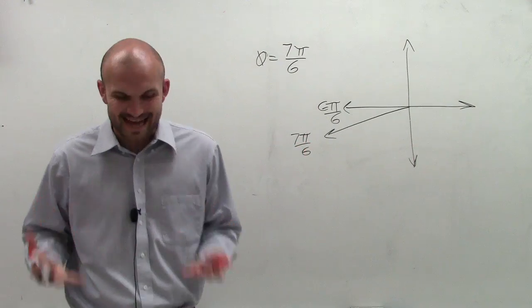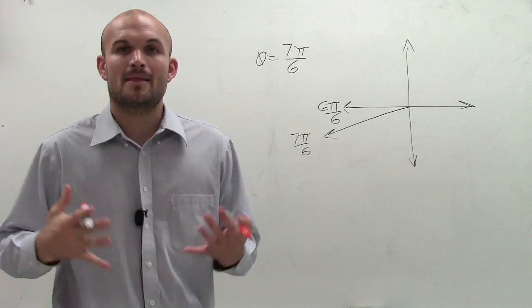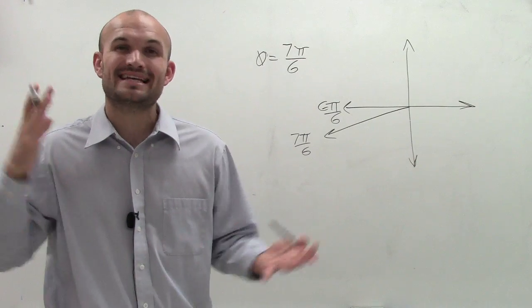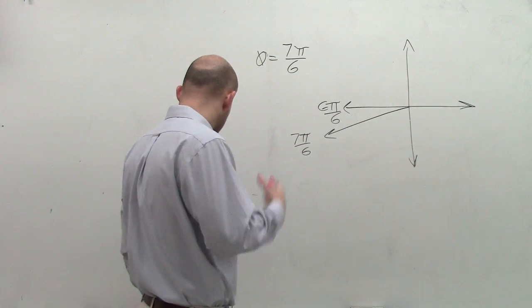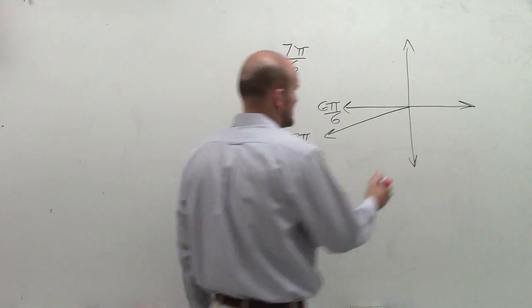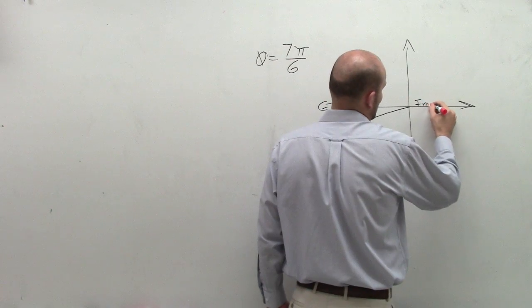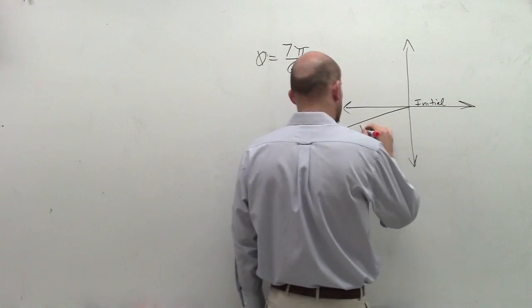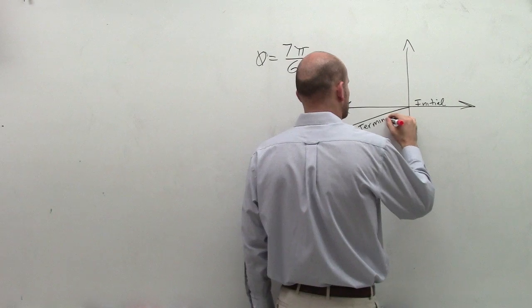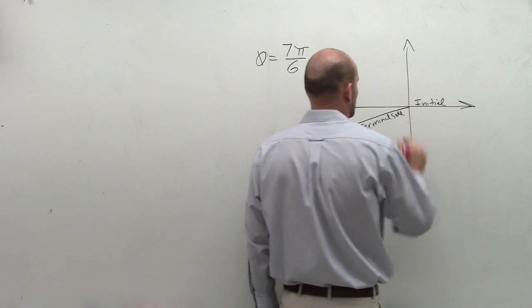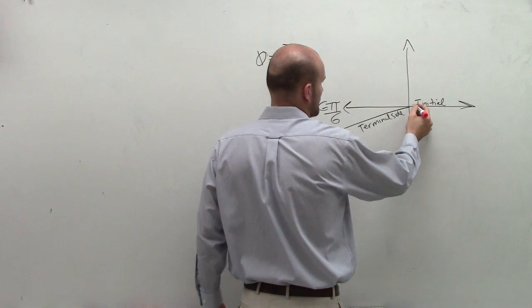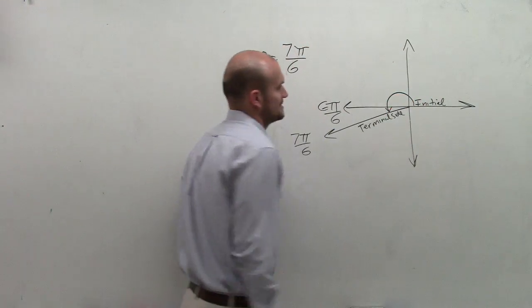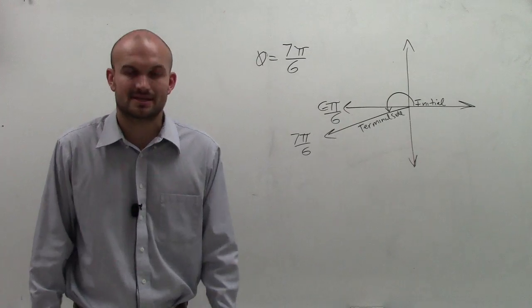So if you remember the definition of coterminal angles, that means two angles that have exactly the same initial and terminal side. So here's my initial, and here's my terminal side. So if I have my initial and terminal side, so the first angle I drew goes like this. And that was 7π over 6.